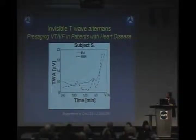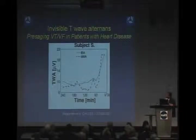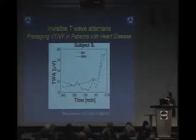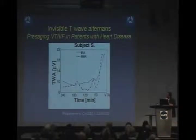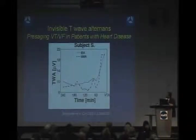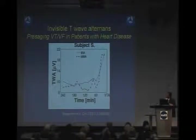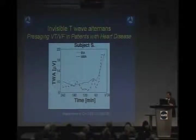There was a very nice study that showed that if you measure T-wave alternans that are invisible, over time, as the alternans gets bigger and bigger, this is two hours before sudden death. So you can see there is evidence that alternans presages sudden death.